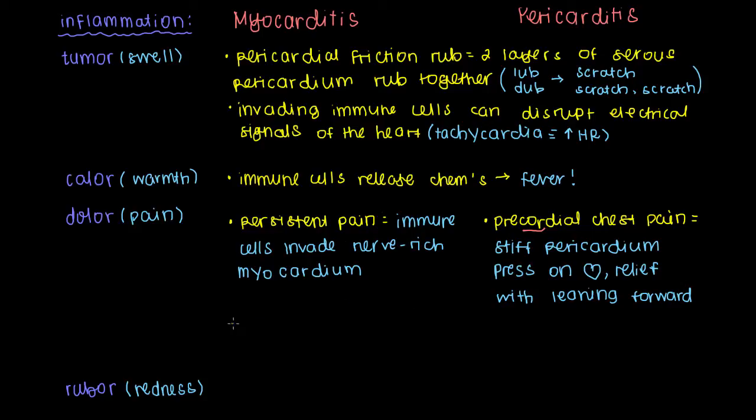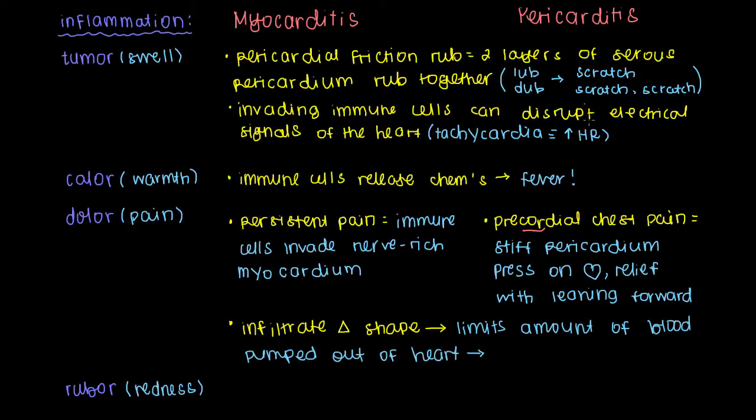And then finally, another type of pain that you can get or a type of chest pain that you can have, this infiltration of immune cells, so this infiltrate can change the shape of whatever it's invading. We talked about that already with tumor or the swelling that happens. And so we can infiltrate the myocardium to cause it to swell or we can infiltrate the pericardium to cause it to become stiff and swollen as well. And when we do that, it makes it difficult for the myocardium to work correctly. And so it limits the amount of blood that can be pumped out of the heart. And you can definitely see this to be true with pericarditis because when the pericardium becomes stiff, the heart isn't able to fill with all the blood that's returning to it. And so effectively, it pumps out less blood to your circulatory system.